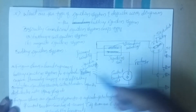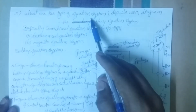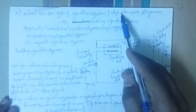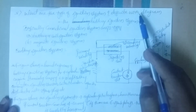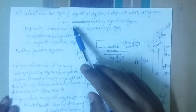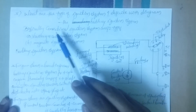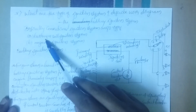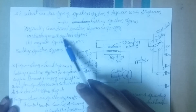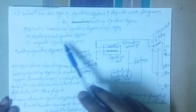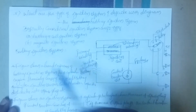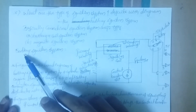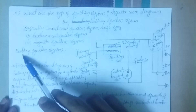Today we are discussing what are the types of ignition system and describing the battery ignition system. Conventional ignition systems are of two types: battery or coil ignition system, and magneto ignition system. We are discussing the battery ignition system.